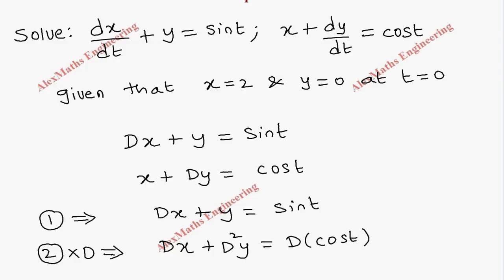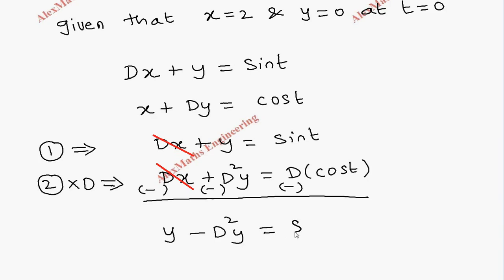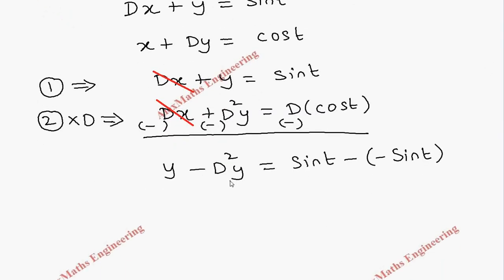Taking the differentiation of cos t, we are going to subtract. So we have to change the sign of all the second terms. We see this Dx and minus Dx cancel. From here, the first term is y, then minus D²y, equal to sin t minus the differentiation of cos t, which is minus sin t. We keep that in a separate bracket, giving us 2 sin t on the right side.